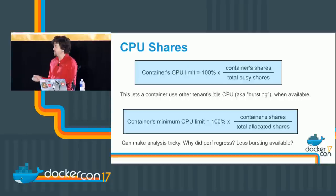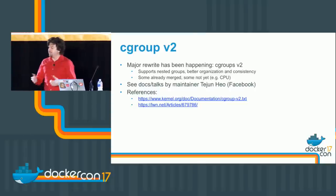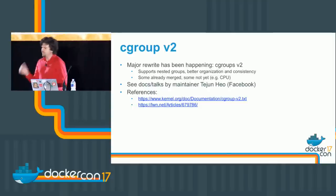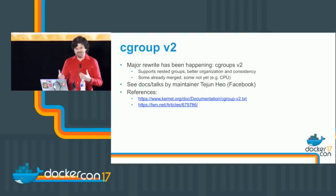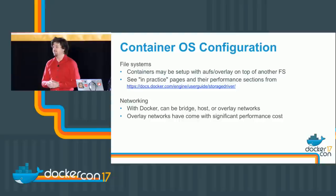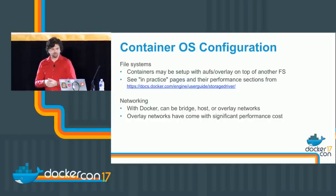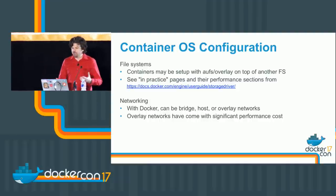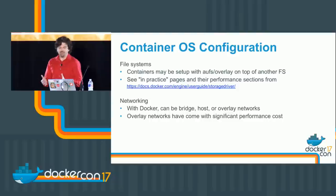Why did performance regress? Was there less bursting available — using CPU beyond that minimum? C-group version 2 has been a major rewrite — some of it's in the kernel, some isn't yet. It supports nested groups, has better organization and consistency. The other basic component is the container operating system configuration — what file systems are we based on, layered file systems, overlay on top of ZFS? Docker.com has good documentation in the in-practice pages for each file system. Networking can be notorious depending on how you set it up — bridge, host, or overlay networks — as overlay networks can come with a performance cost.